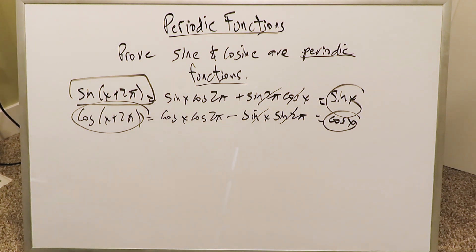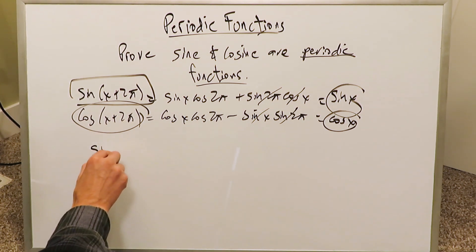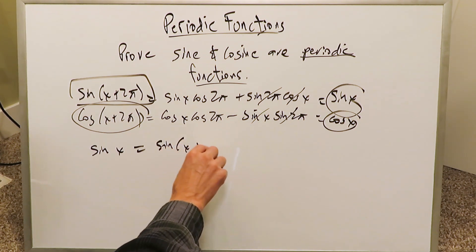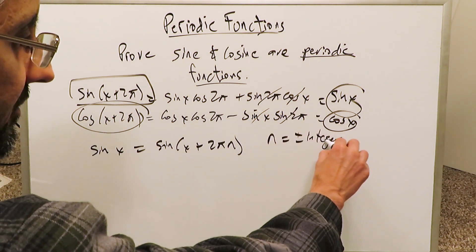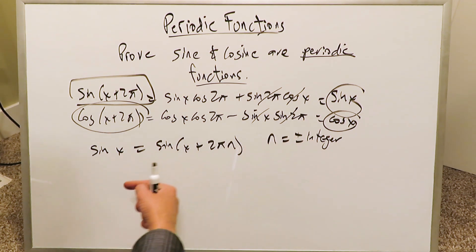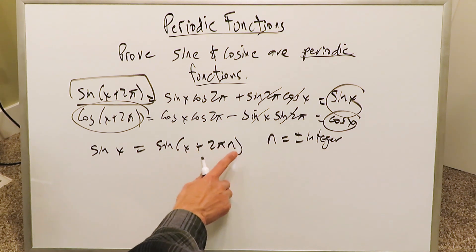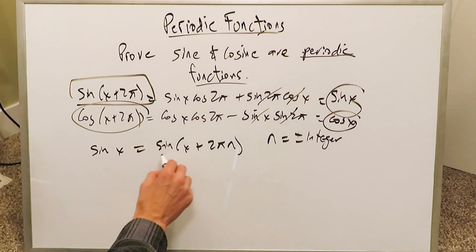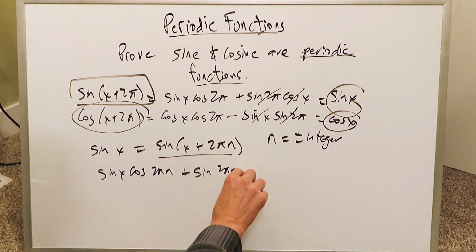Now we can take this one step further and additionally prove that sine and cosine are periodic functions. We can just pick one single function — I'll pick sine; you can do the same for cosine. Sine x equals sine(x + 2πn), where n can be any integer, positive or negative. For any of these integers, the result is still the same because it's a periodic function — repetitive values all landing on the same point on that curve. When you expand this out, you're looking at sine x · cosine(2πn) plus sine(2πn) · cosine x.